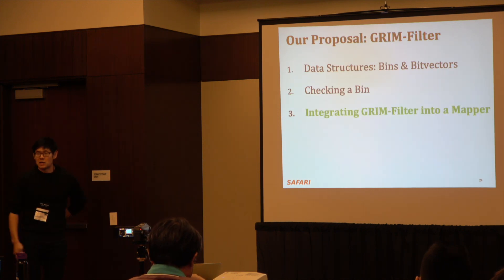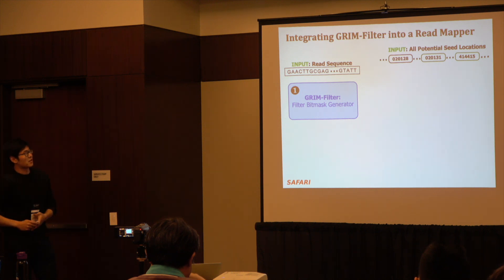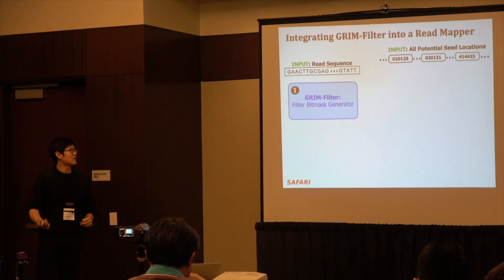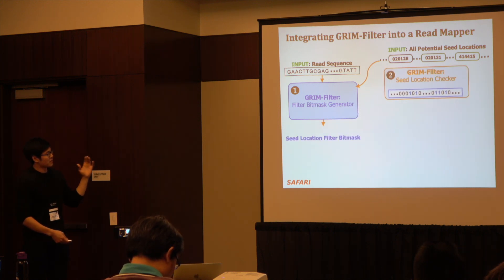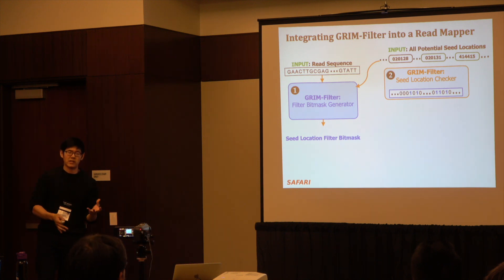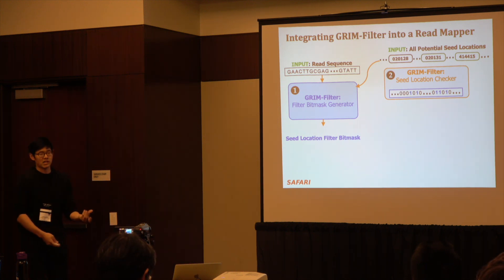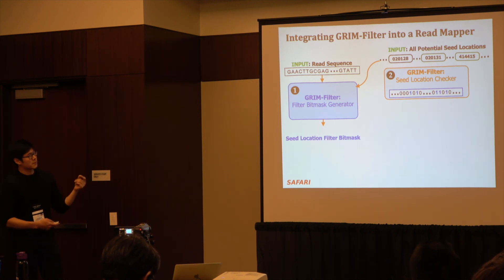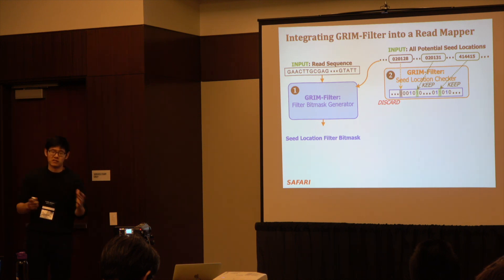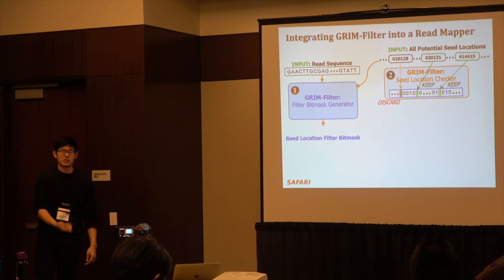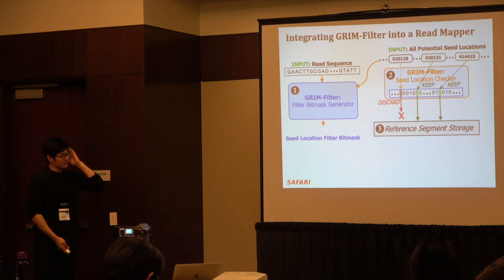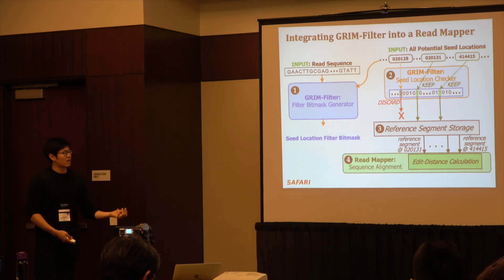To integrate GrimFilter into a mapper: GrimFilter takes read sequences and a number of seed locations extracted from the hash tables, and outputs a bit vector representing which bins need to be checked for the existence of this read. We send all possible seed locations, translate them to bin numbers, check the seed location filter bit mask, and if we find a one, we proceed with alignment; otherwise we discard the location. We then extract reference segments and run the edit calculation with the readmapper, finally obtaining the correct mapping.